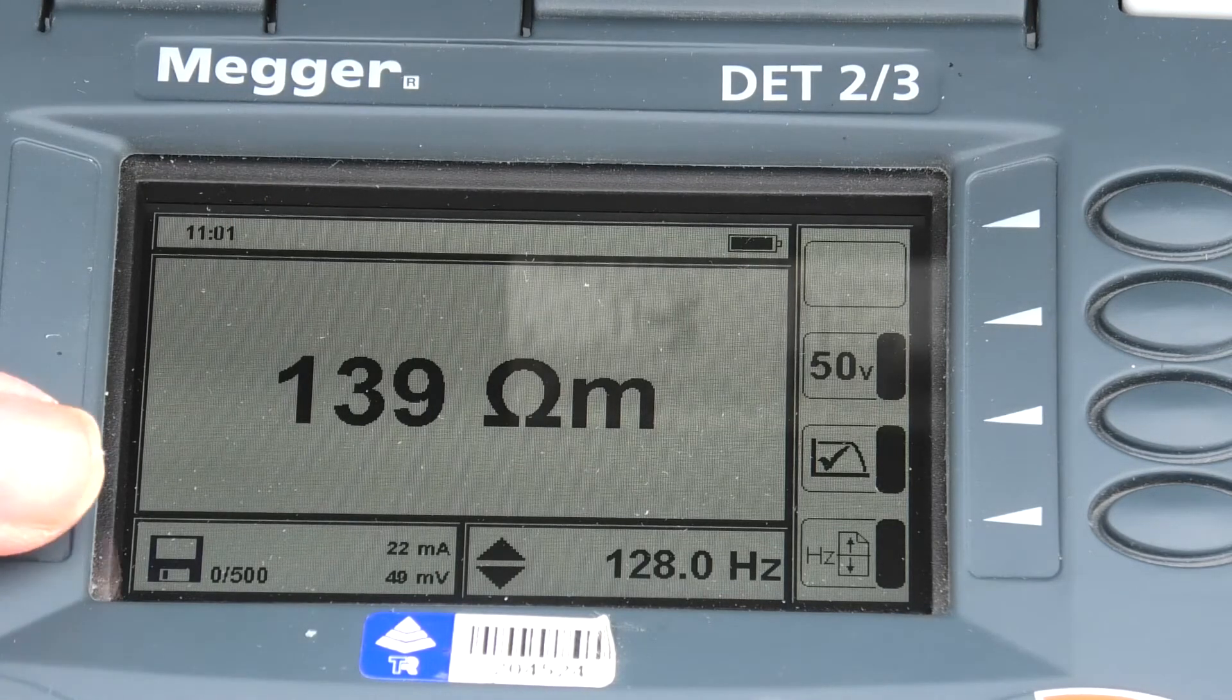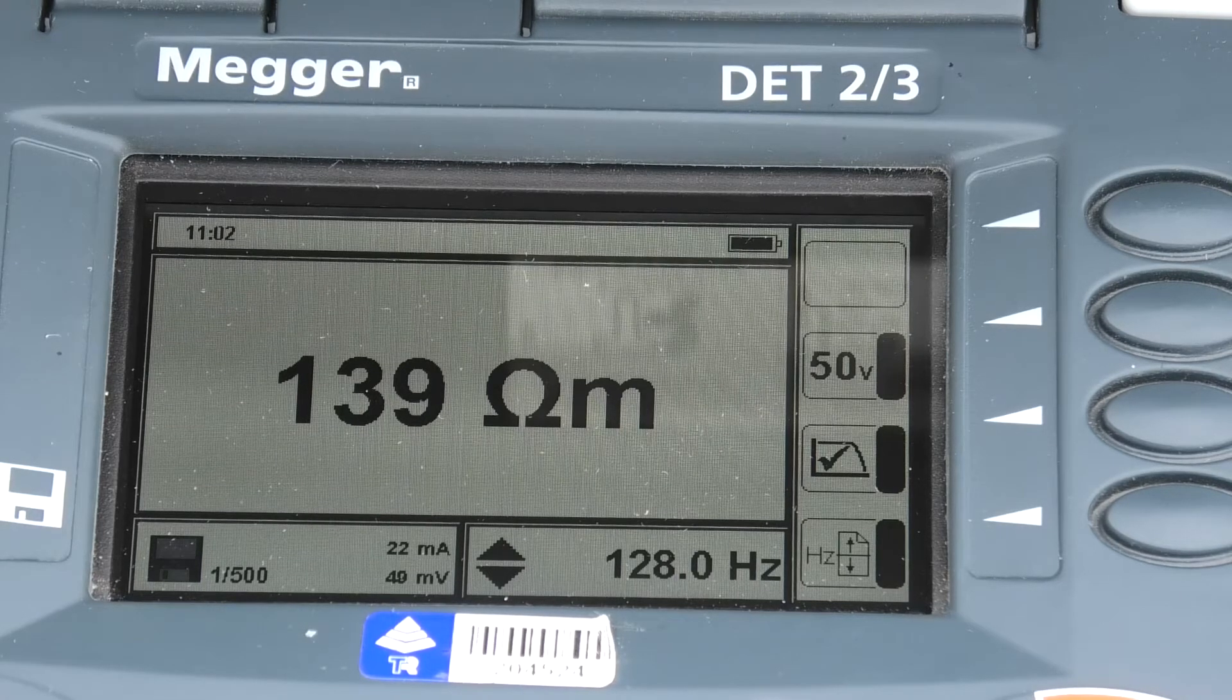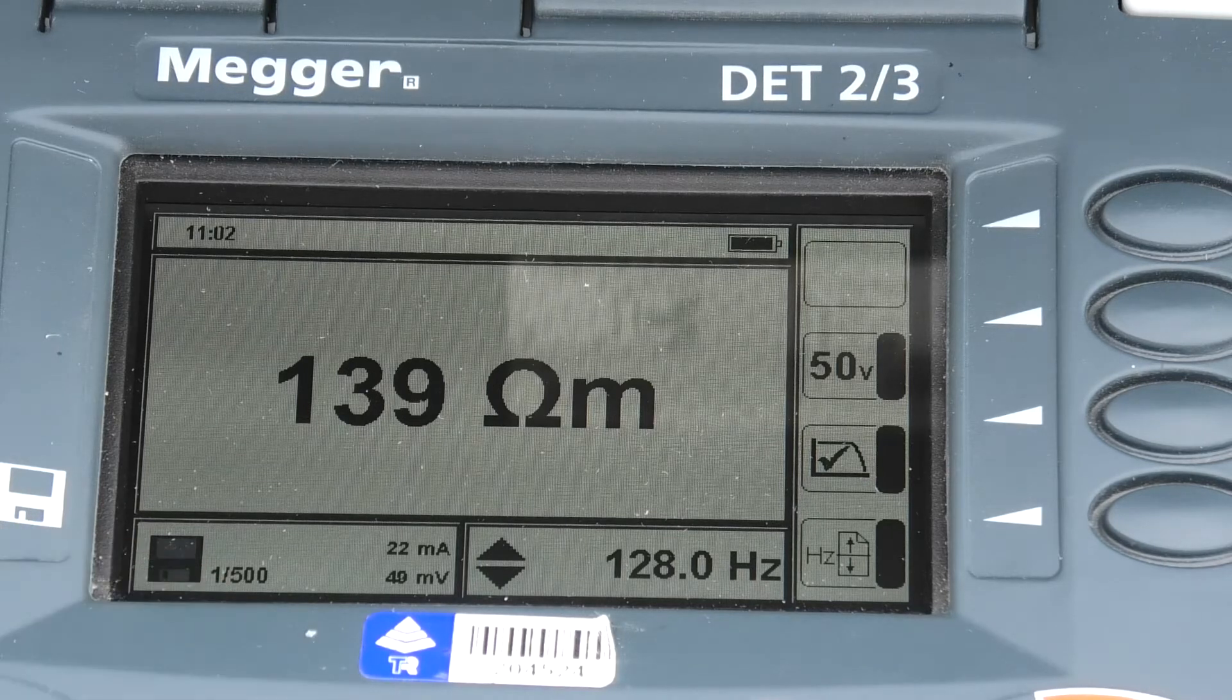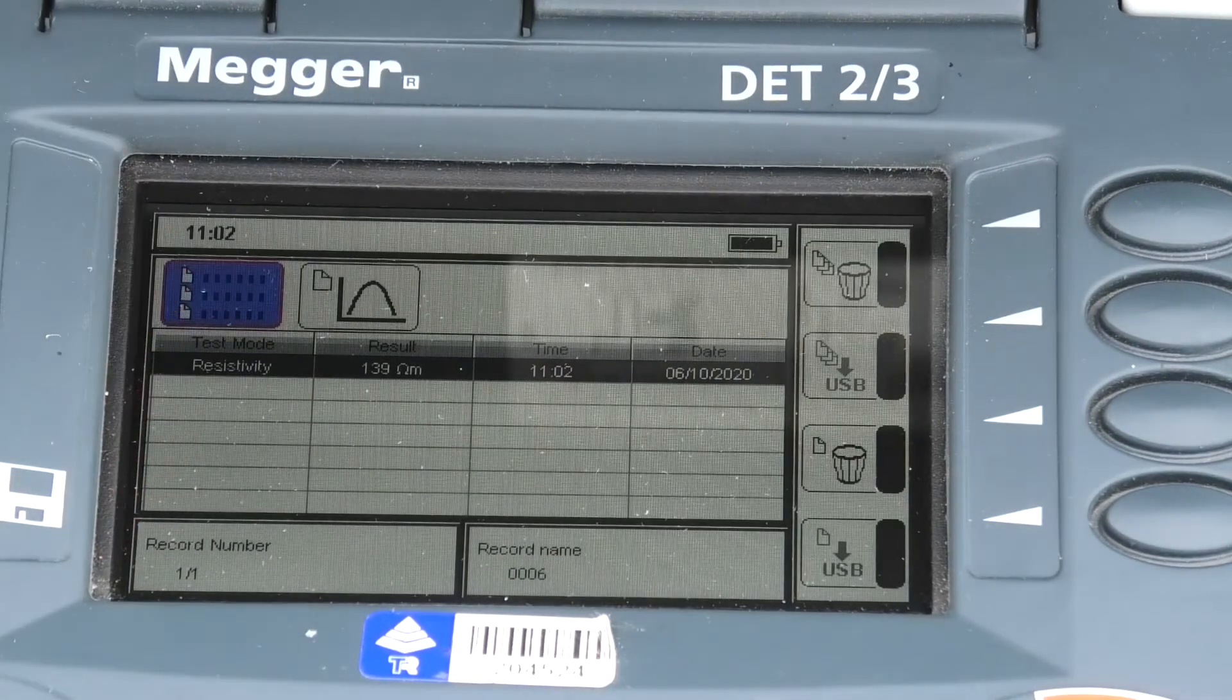Now at this point we can hit the button over this side to save the reading. That will have saved that reading. That number is incremented by one. We can also switch one of these dials down to the little computer symbol.